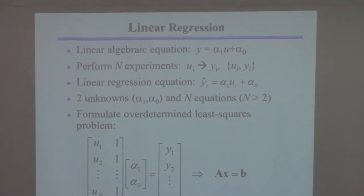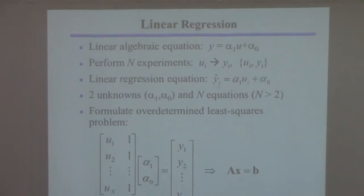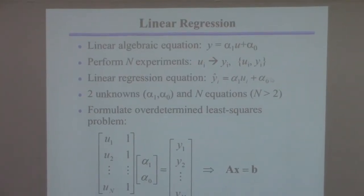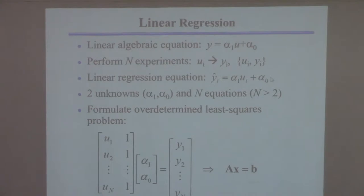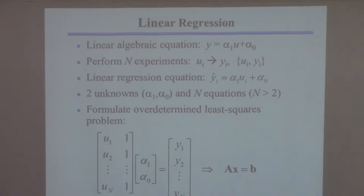If you have the regression equation, you get one equation for each experiment — Y1 hat with U1, Y2 hat with U2, and so on. So you get as many equations as you have experiments, but you only have two unknowns. If you have ten equations and two unknowns, that's an overdetermined problem, which is why we use the overdetermined least squares solution.